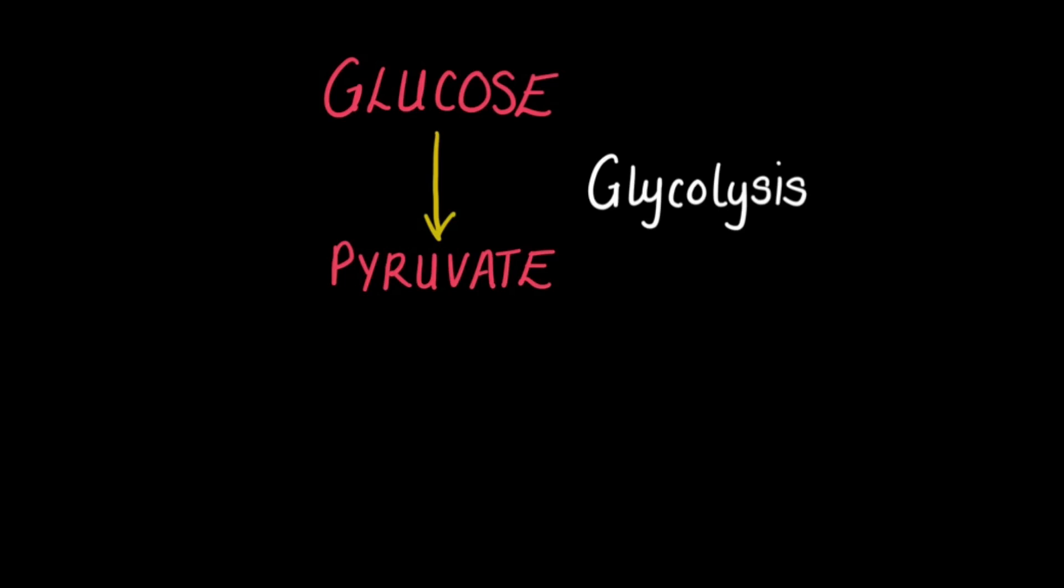During aerobic respiration, glucose is broken down into pyruvate through the process of glycolysis as described before, and this yields 2 ATP.